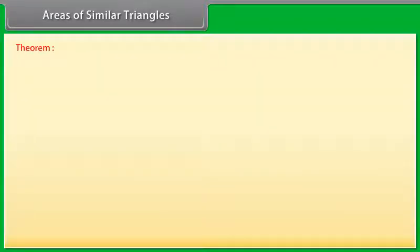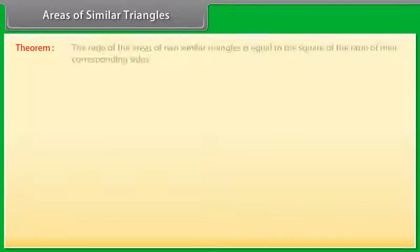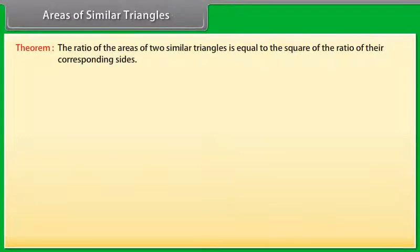Areas of similar triangles. Theorem: The ratio of the areas of two similar triangles is equal to the square of the ratio of their corresponding sides.